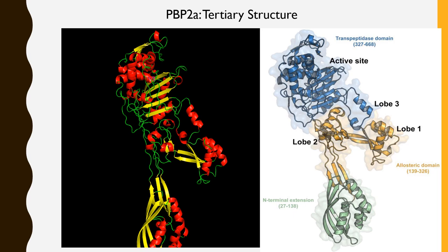Here we can see the tertiary structure of penicillin binding protein 2A. On the left is a predicted model I created first using CPH models and then PyMOL to help visualize it. On the right is the actual tertiary structure of PBP2A. It is broken up into different domains: the transpeptidase domain, below that the allosteric domain, and then the N-terminal extension.